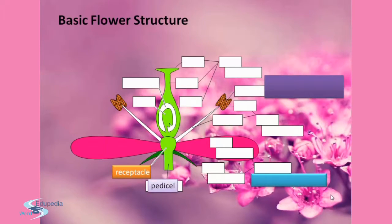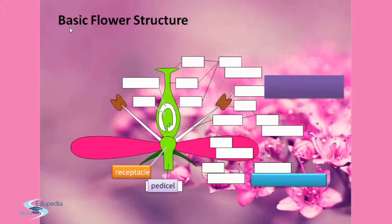Hello students, my name is Neyoti Saeed and thanks for watching Ittypedia World videos. My topic for this presentation is the sixth section of the chapter morphology of angiosperms, that is flowering plants. In this section we'll be studying about the basic flower structure.